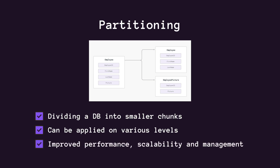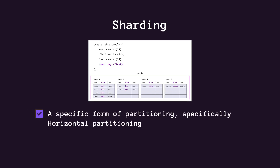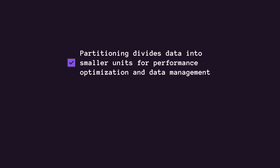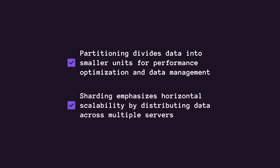What Discord did is partition their database based on a specific channel, so all the messages within one channel live in one partition, replicated across three different nodes for fault tolerance. The goal of partitioning is to improve performance, scalability, and data management. There's also a related term called sharding — sharding is a specific form of partitioning that distributes data across multiple servers or nodes in a cluster. In summary, partitioning focuses on performance optimization, whereas sharding emphasizes horizontal scalability by distributing data across multiple servers.